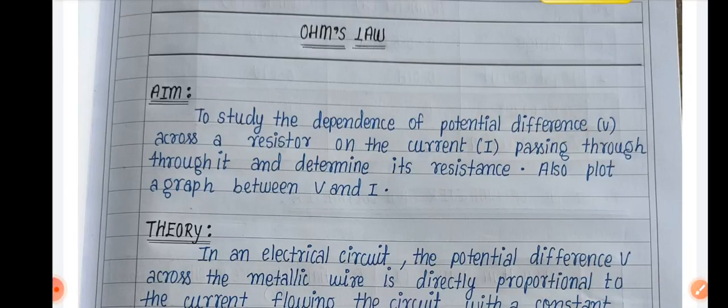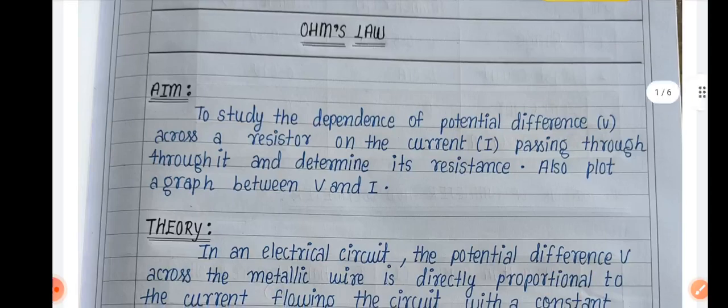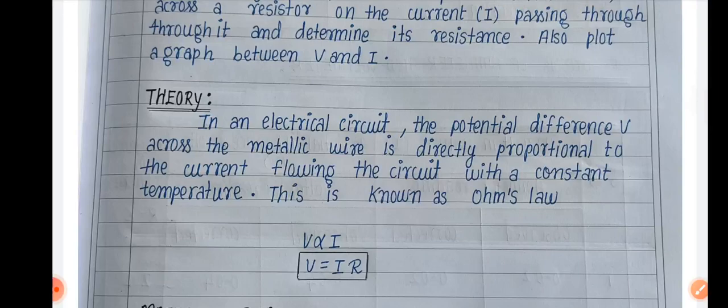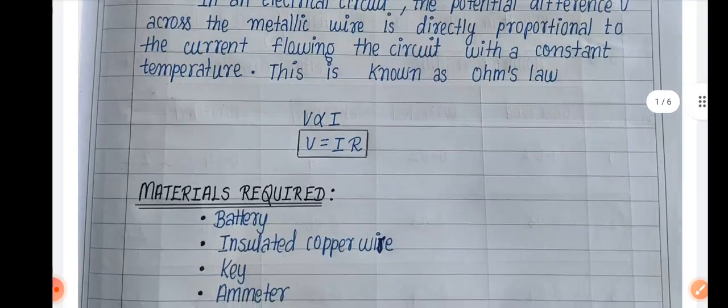That is our aim: to study the dependence of potential difference across the resistance on the current passing through it and determine its resistance, and also plot a graph between V and I. Temperature constant because the resistance changes with the temperature.